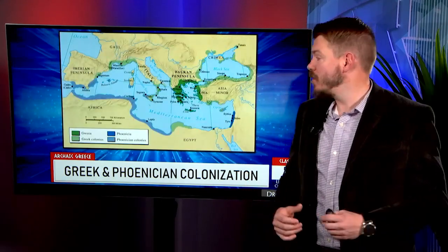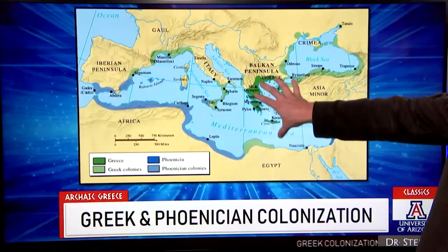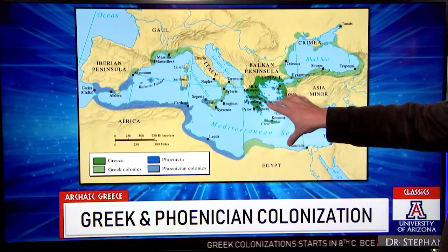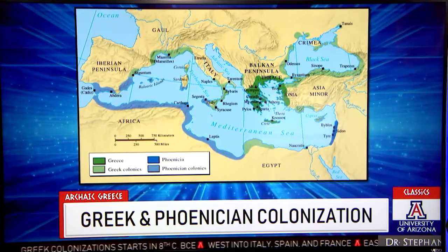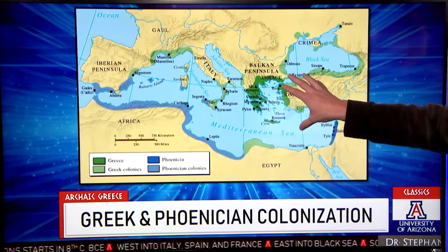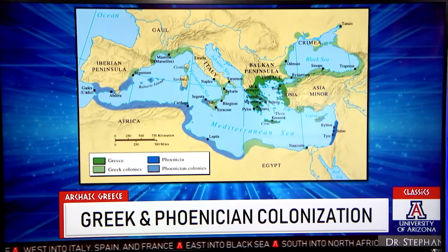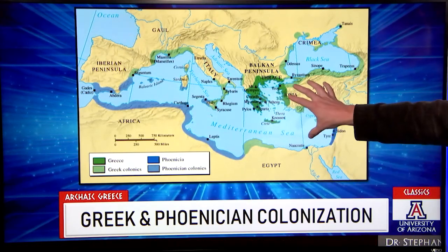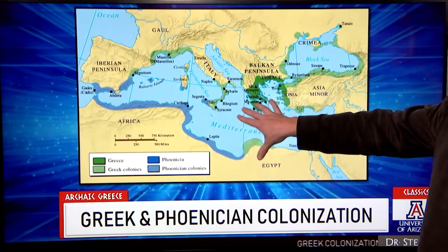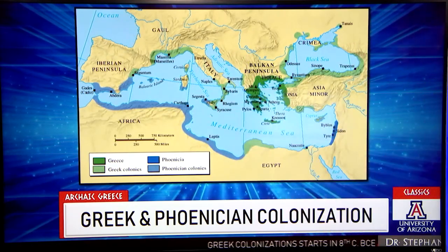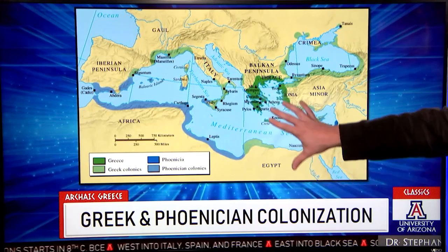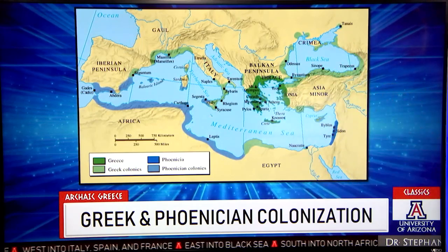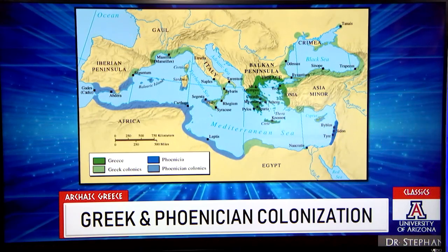We also get the origins of colonization. The Greek homeland includes the Greek mainland, the island of Crete, the west coast of modern-day Turkey, and all the islands in between. But now they've set sail into the Black Sea, into southern Italy and Sicily, into what's France and Spain today — building colonies and making Greek culture spread all the way across the Mediterranean world.